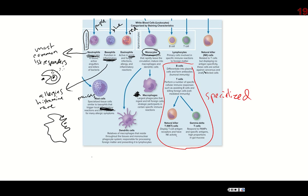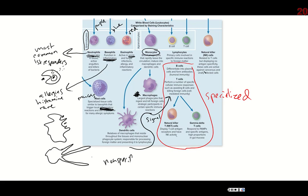Macrophages are also responsible for signaling the T cells about what's going on. Dendritic cells are similar — 'dendritic' means the cell has long projections coming off of it, which they use to help grab the pathogen. Dendritic cells are also signaling cells that help activate T cells. That entire list — neutrophil, basophil, eosinophil, mast cell, macrophage, dendritic cell — these are all non-specific, also referred to as unspecialized cells.